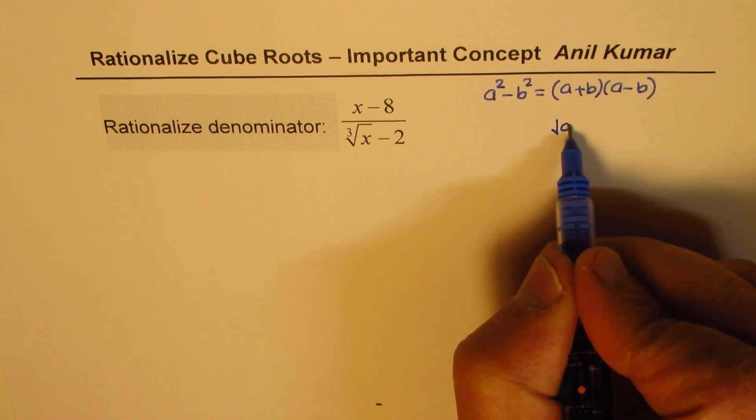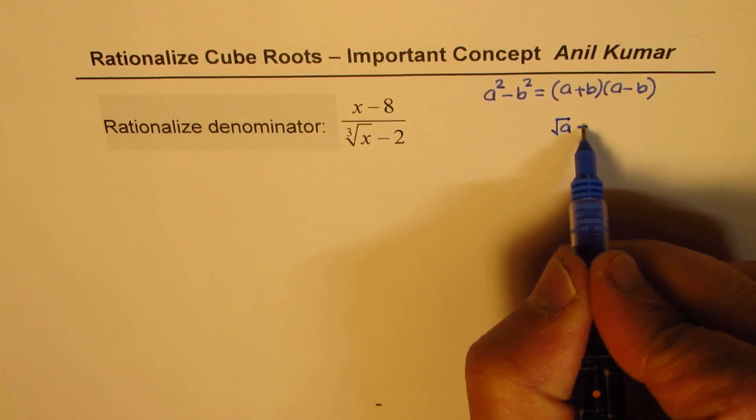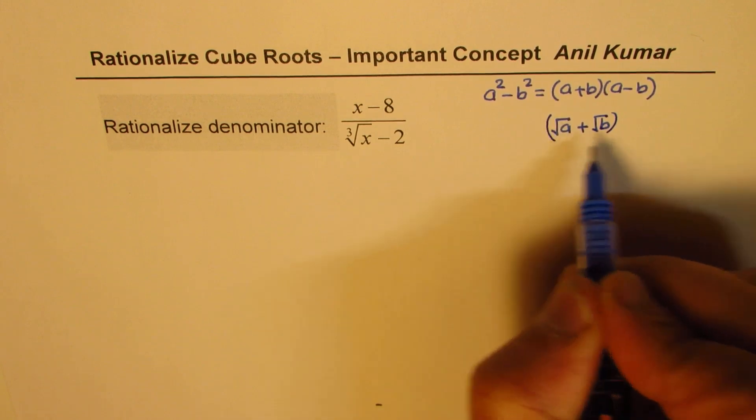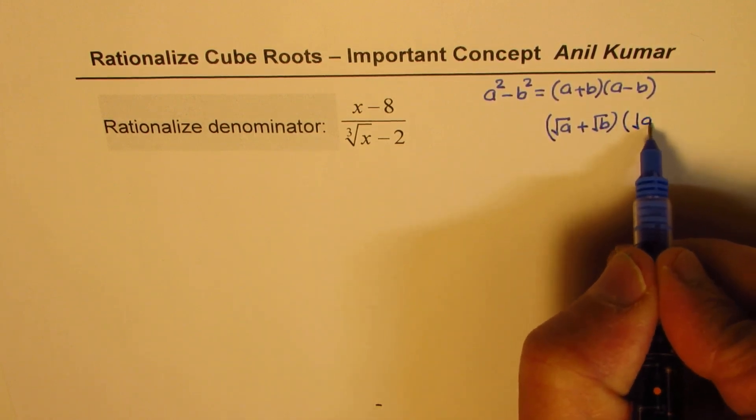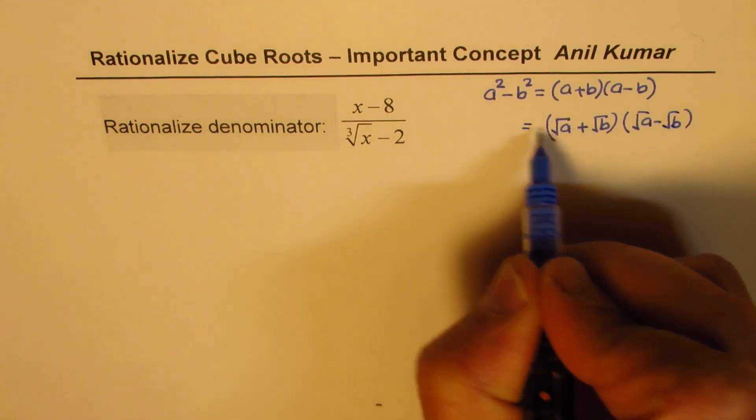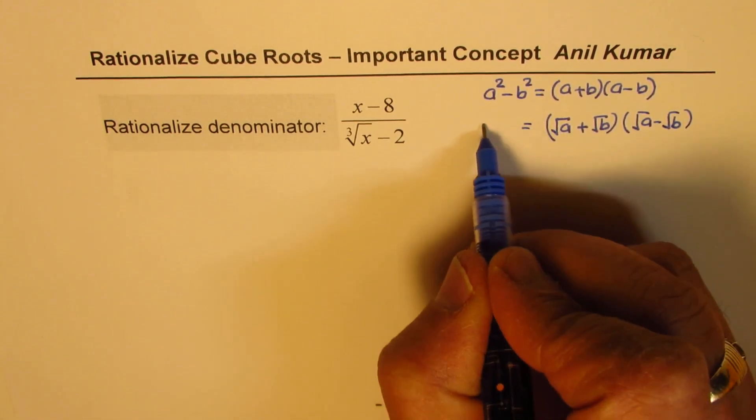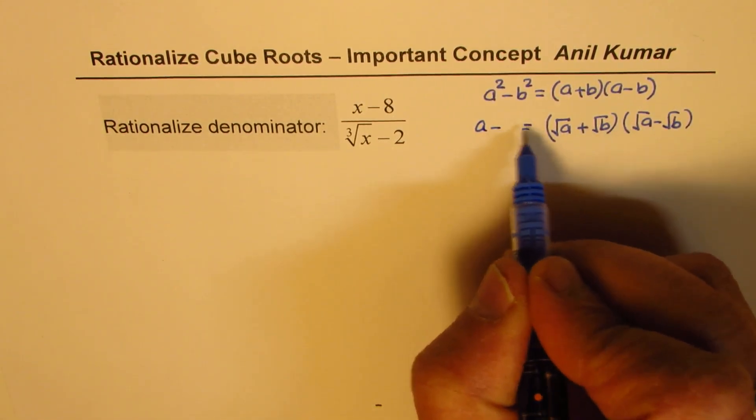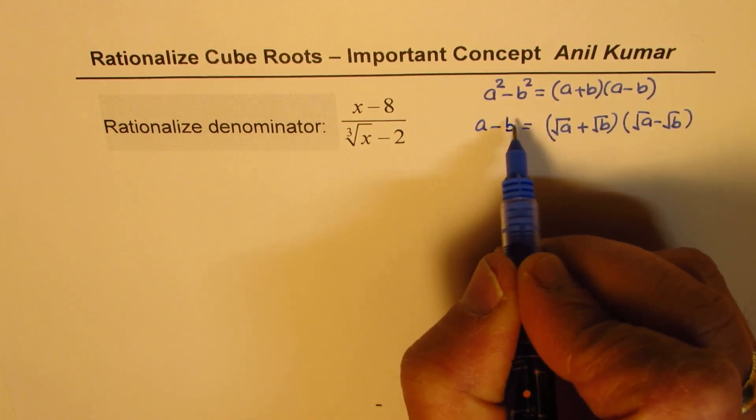If you have square roots, let's say a square root times b square root, and when you multiply them, what do we get? Square of a square root will be a, and square of b square root will be b.